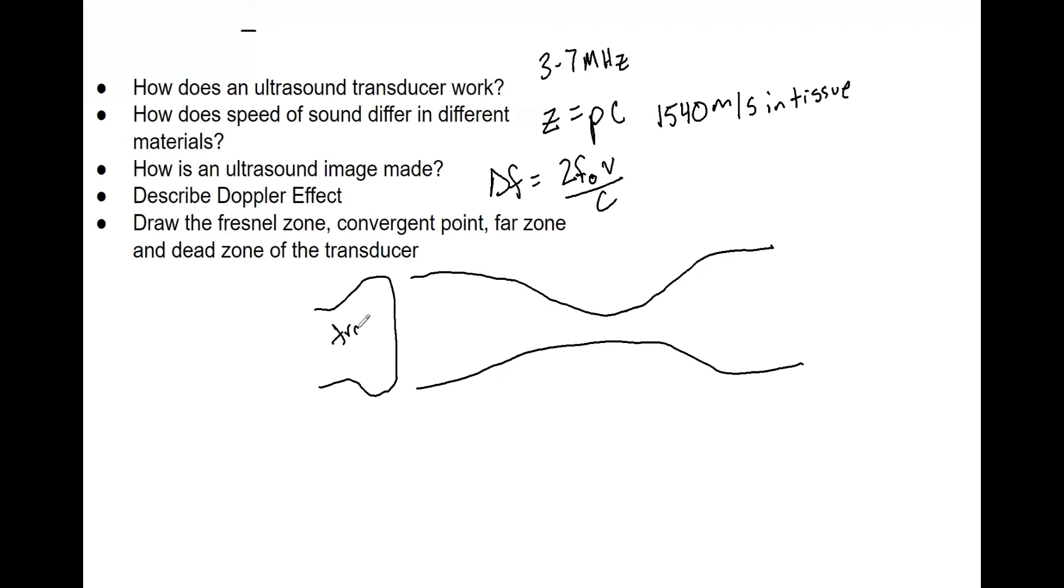Right off the bat, close to the transducer is the Fresnel zone. Then we have the convergent point where the waves converge into a point—that makes sense, right? Then the far zone is pretty intuitive. The Fresnel zone is the near field with converging beams from the transducer, leading to the best images. The convergent point has the best resolution. In the far zone, the beam starts to diverge and the image is more degraded.